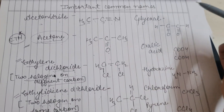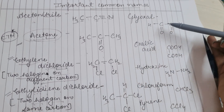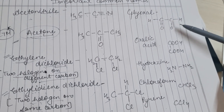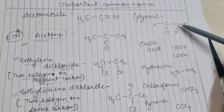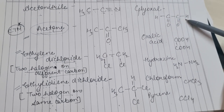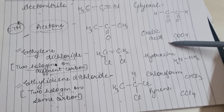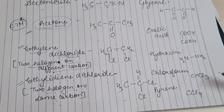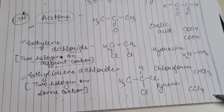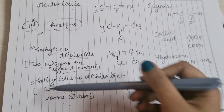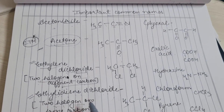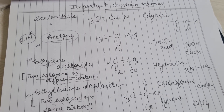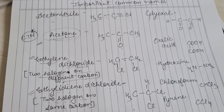कुछ और important common names हैं जो याद करने पड़ेंगे: Glyoxal (CHO-CHO structure), Oxalic acid, Hydrazine, Chloroform, और Pyrene। These are some important common names — draw करके practice करो, easily learn हो जाएंगे।